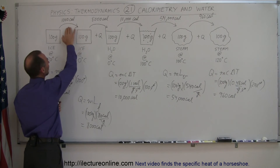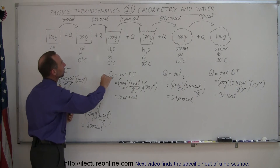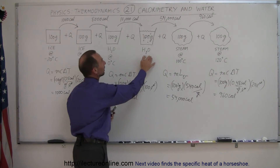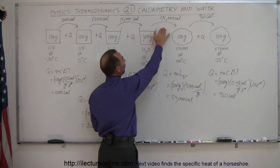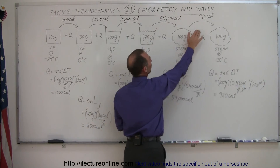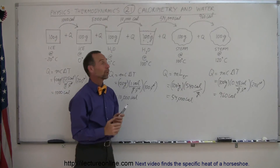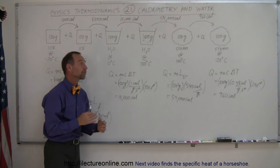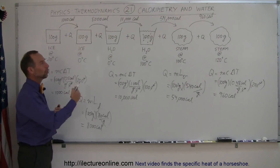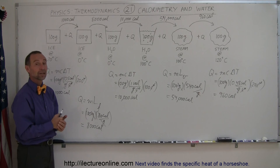To summarize: heating 100 g of ice from -20°C to 0°C requires 1000 calories; melting it requires 8000 calories; bringing water from 0°C to 100°C requires 10,000 calories; vaporizing it requires 54,000 calories; and heating the steam another 20°C requires 960 calories. This gives a good picture of how heat changes either the temperature or the phase of water. We'll now look at more calorimetry problems.